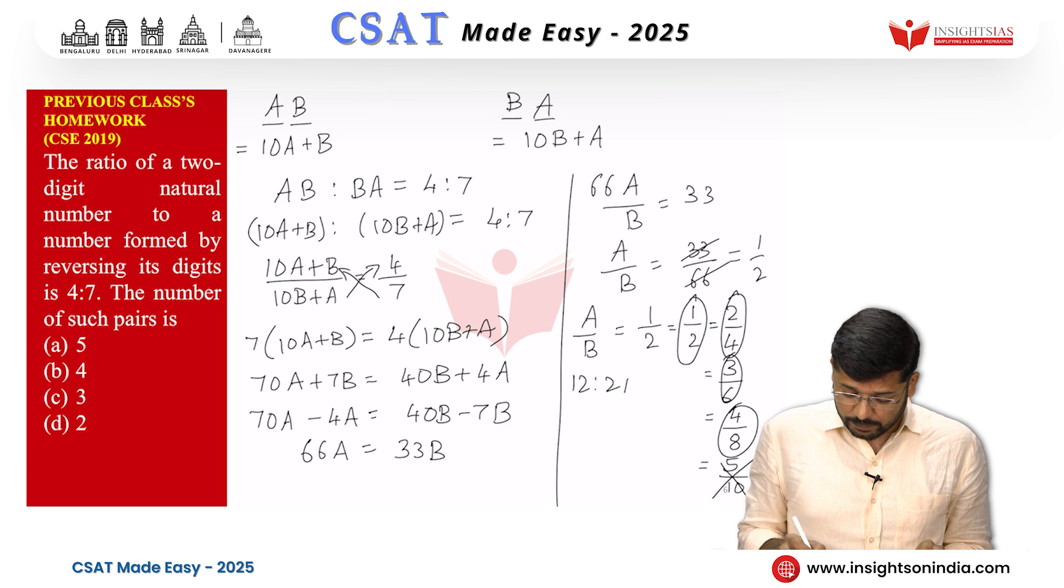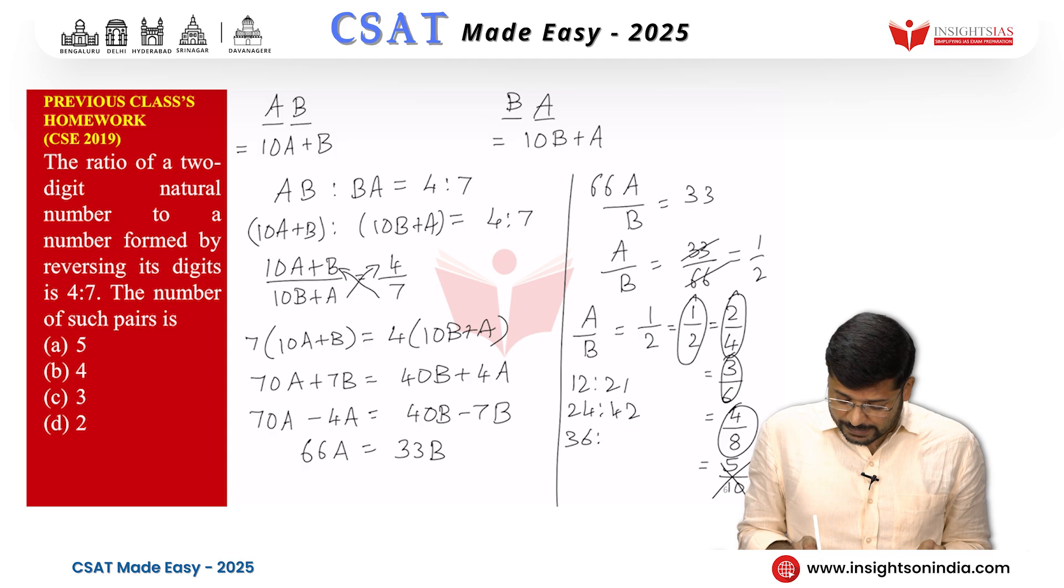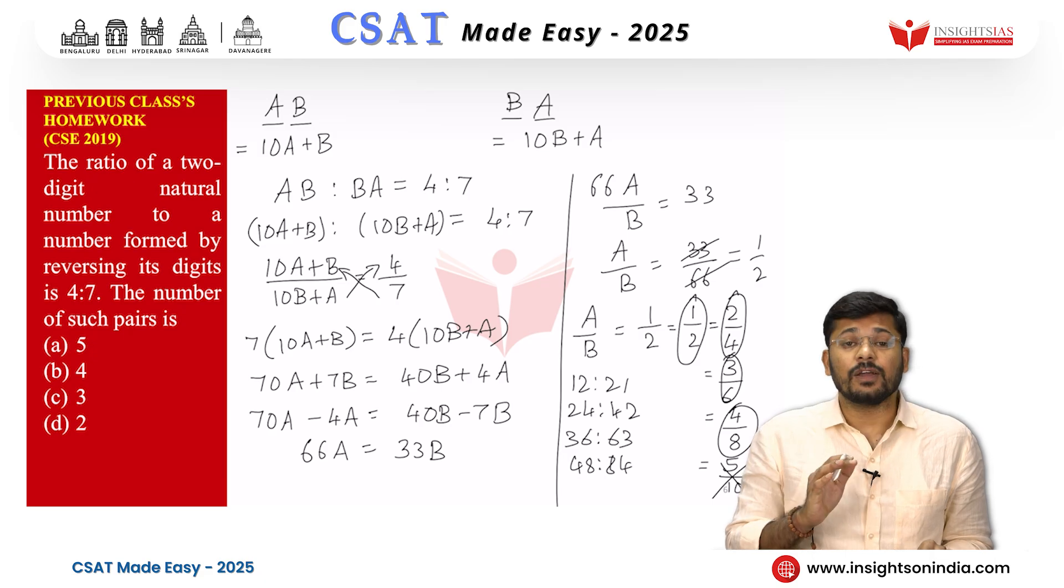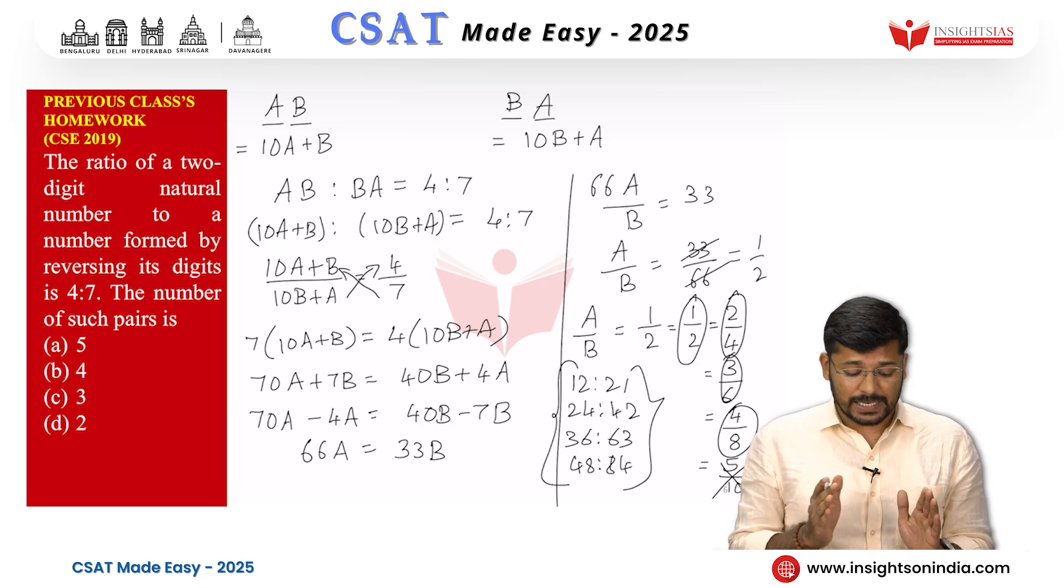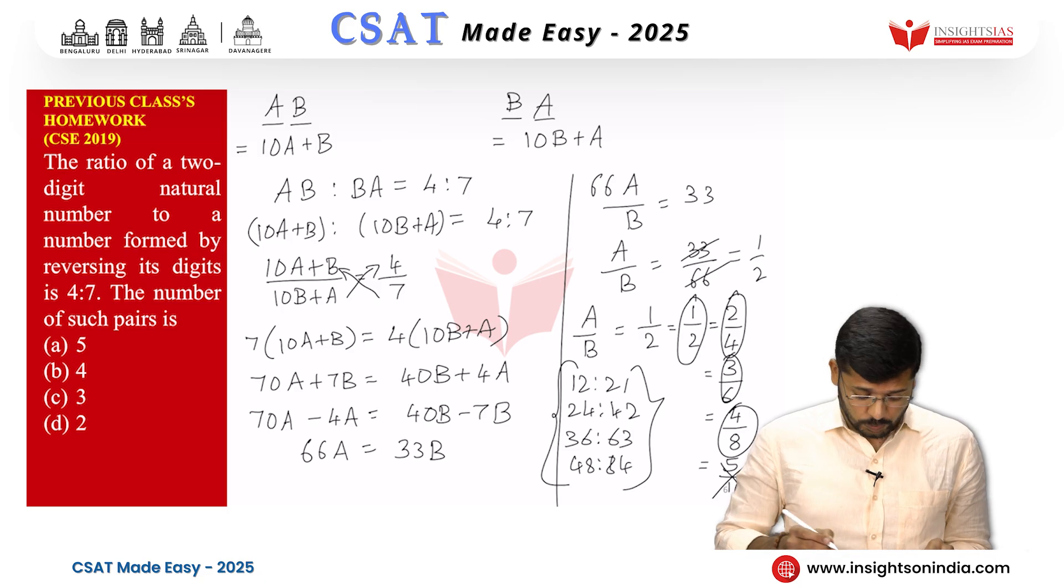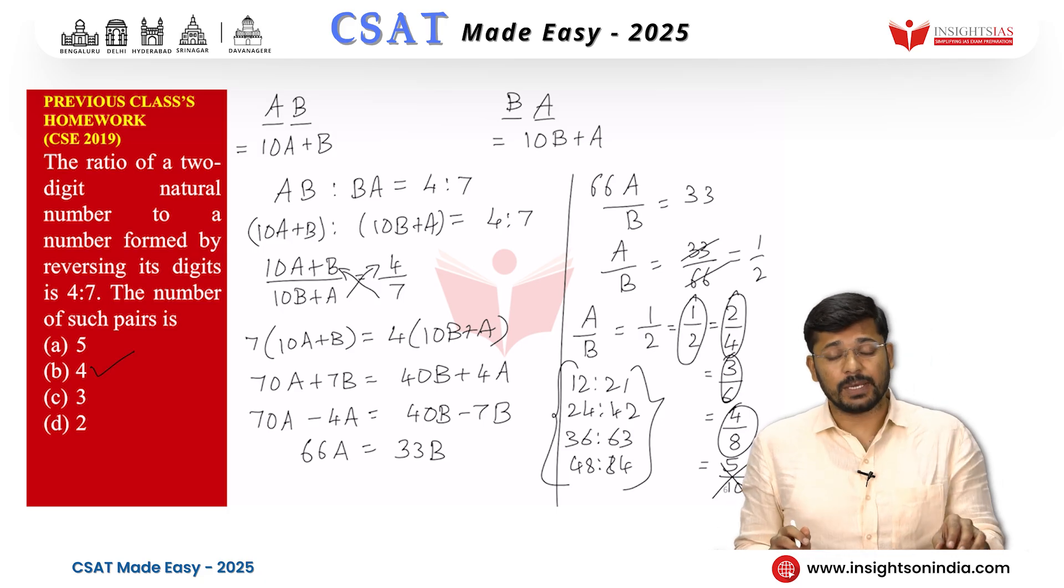That is 12 is to 21. This would be 4 is to 7. 24 is to 42. This would be 4 is to 7. 36 is to 63. This would be 4 is to 7. And 48 is to 84. This would also be 4 is to 7. So there are 4 such pairs which satisfy the given condition. So our answer is option b, 4.